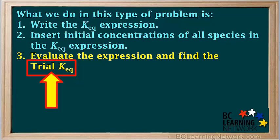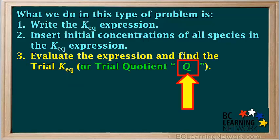Later we'll find out whether the ratio needs to increase or decrease in order to become equal to the actual Keq, and thus establish equilibrium. Some textbooks and teachers call this the trial quotient, or Q for short. You should know that trial Keq and Q mean exactly the same thing — it is what you get when you insert initial concentrations into the Keq expression and work out the value of the expression.